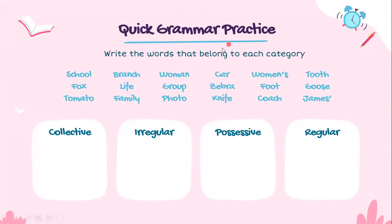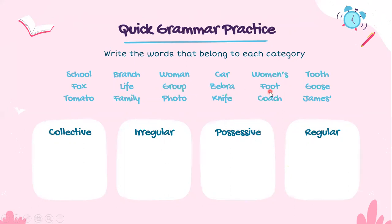Now let's do a quick grammar exercise. You have a group of words and you're going to write them in each category: collective, irregular, possessive, and regular. School becomes schools — regular. Branch becomes branches — regular. Woman becomes women — irregular. Car becomes cars — regular. Woman's with apostrophe s — possessive. Tooth becomes teeth — irregular. Group is a collective noun. You'll also categorize: zebra, foot, goose, tomato, family, photo, knife, coach, and James with an apostrophe.